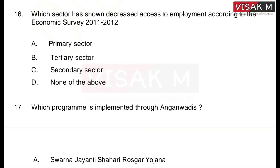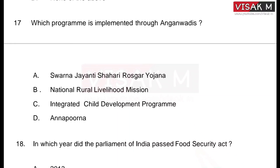Moving on to the first question: which sector has shown decreased access to employment according to the Economic Survey of 2011-12? Go through the options: A) Primary sector, B) Territory sector, C) Secondary sector, D) None of the above. The right answer is option A, Primary sector.